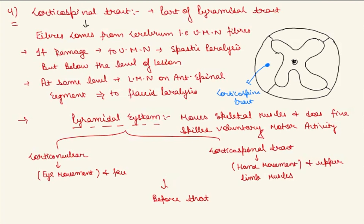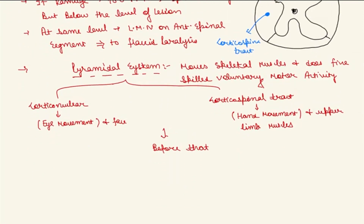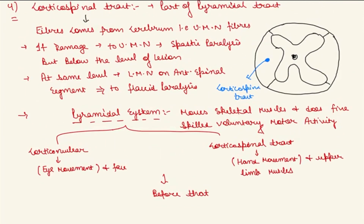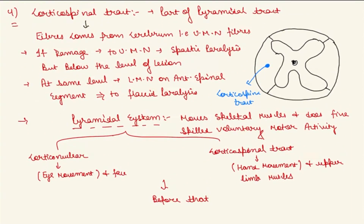For example, playing a violin involves fine movement done by the pyramidal system. But before the pyramidal system acts, the planning is done by the extrapyramidal system — the basal ganglia. In the next section, I will explain the upper motor neuron, lower motor neuron concept, and the basal ganglia in more detail.